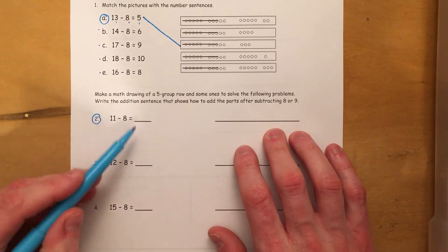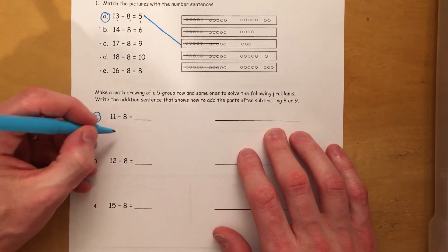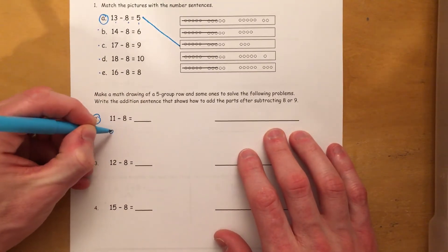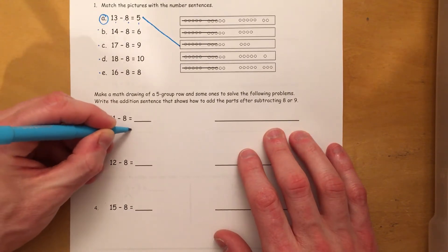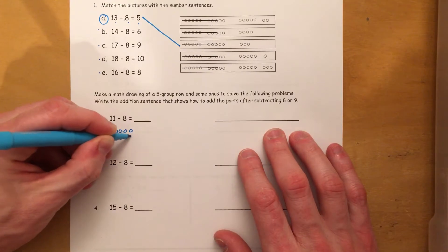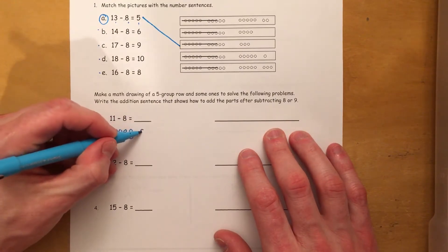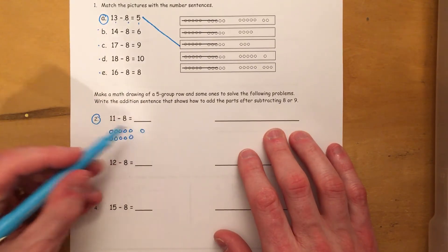So what we're going to do is we're going to take this, and we're going to draw it out. So once again, let's go ahead and use our 10 frame. So I've got 1, 2, 3, 4, 5, 6, 7, 8, 9, and 10. And then there's my 11 right there.